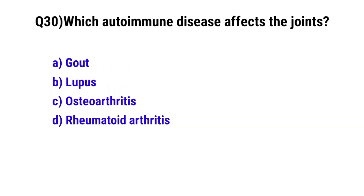Question No. 30: Which immune disease affects the joints? The correct option is D: Rheumatoid arthritis.